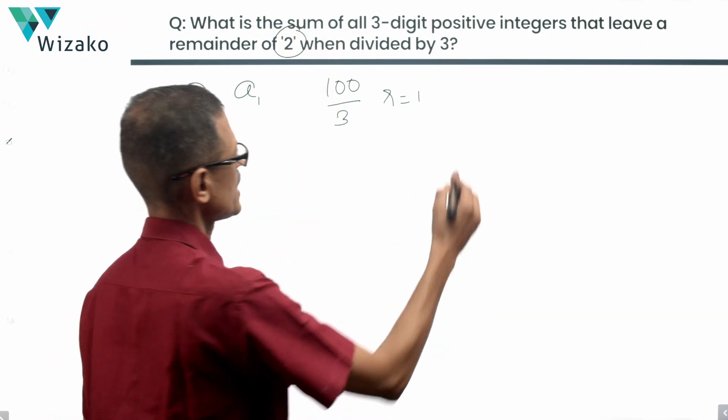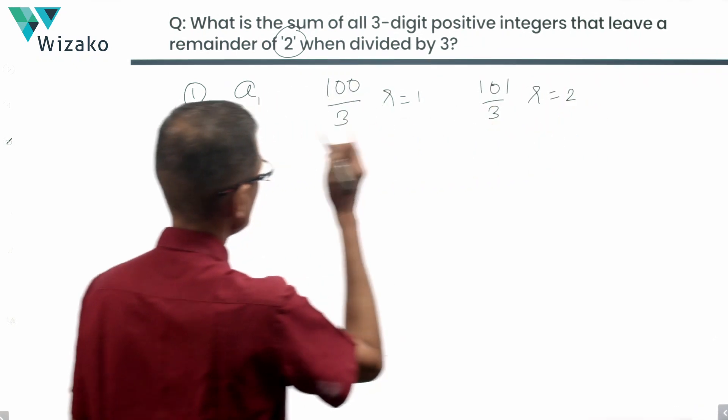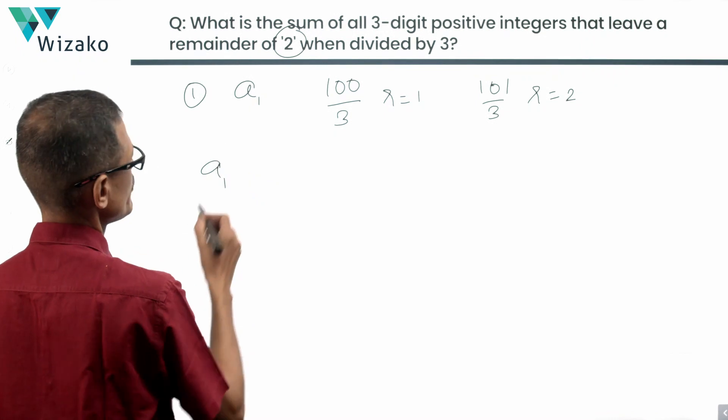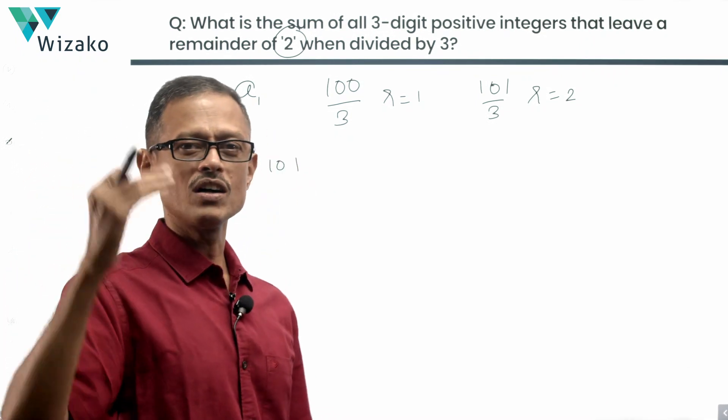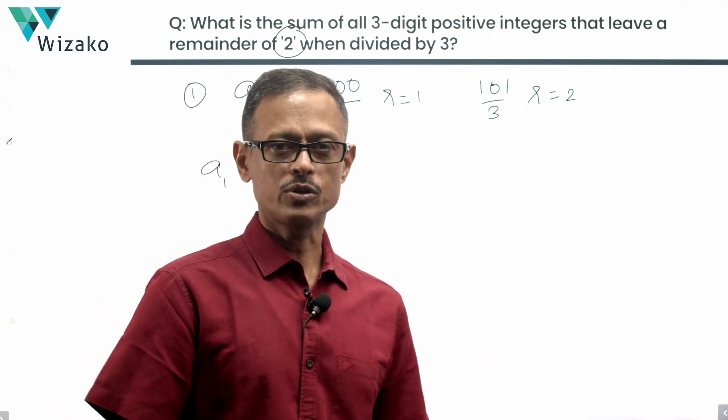The next number, which is 101, when divided by 3, will leave a remainder of 2. So have we computed the first term now? The first term of our sequence is equal to 101. It's the smallest three digit positive integer which when divided by 3 will leave a remainder of 2.